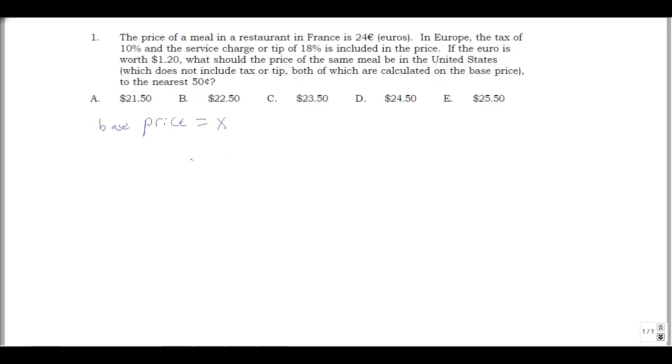And the idea here is if you do x plus, well we're adding 18% and 10%, that's 28% to x, that should give me 24 euros. So I can find the number of euros that the base price is. Note this is 1x plus 0.28x. So this is 1.28x equals 24 euros.